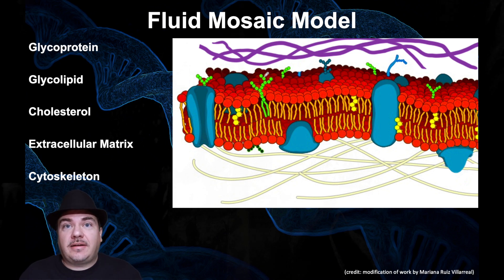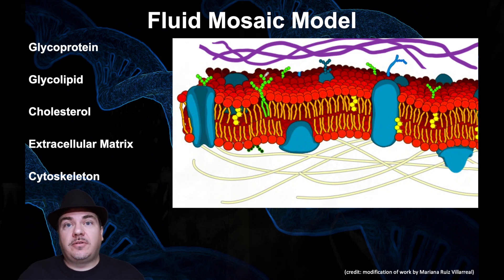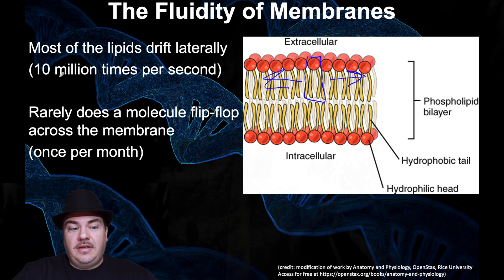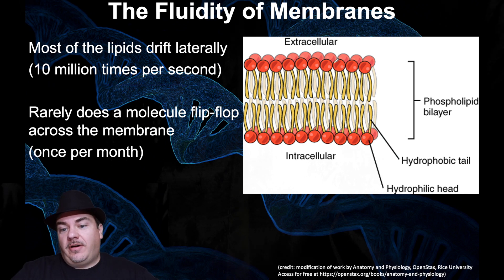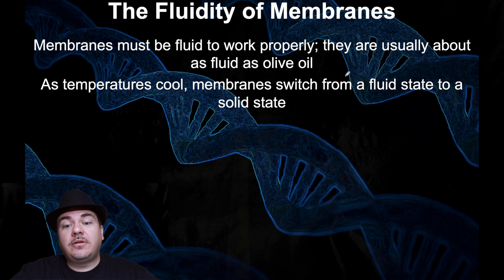In reality, the membrane is not static. Many people think of the membrane as a stiff, rigid, solid object because it's the barrier of the cell — but that's not correct. Membranes are actually fluids, and they have to be fluids in order to function. These phospholipids are moving laterally — left and right — 10 million times every single second. Occasionally, a phospholipid will flip-flop from one side to the other, but that's only about once per month versus 10 million times per second laterally.